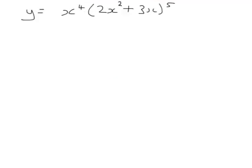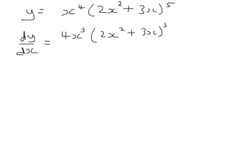Here's another example we can look at. In this case, if we were to multiply this out completely it would take quite a bit of time. So let's use the product rule for differentiation. The product rule says that if we've got two functions multiplied together, differentiate one of them and leave the other one alone, and then leave the first one alone and differentiate the second one. So we need to differentiate 2x squared plus 3x to the power of 5.